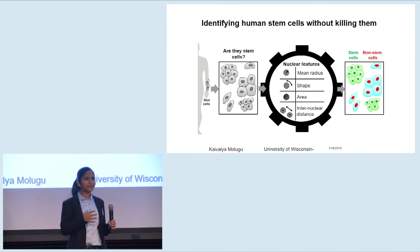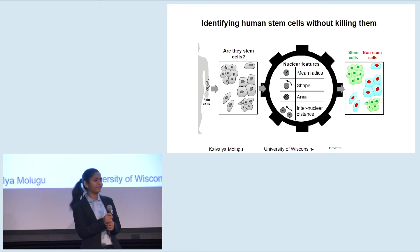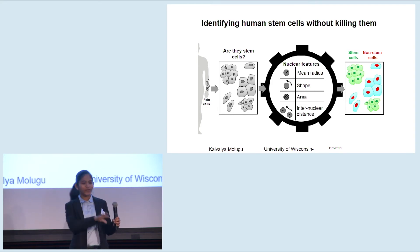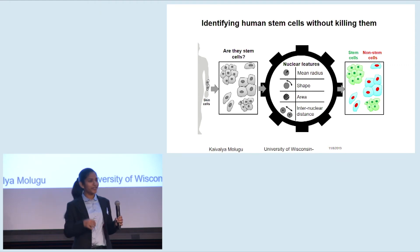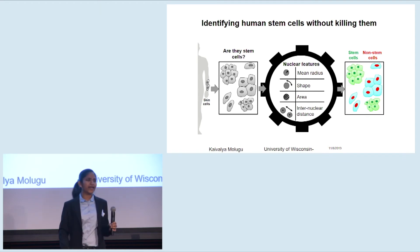Our lab started asking: is there a way to identify stem cells without killing them? So we started staring at stem cells and the skin cells we derived them from, and we noticed that the nucleus in both these cells looks different. The nucleus is a component of the cell — essentially the brain of the cell — telling it what it should be doing.